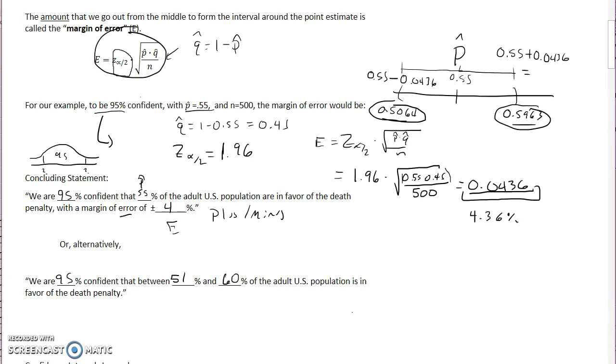And you can see this is now, rather than just saying, you know, 55% of the population believes in the death penalty, we're presenting it as an interval. So we think we're pretty confident that it's somewhere between 51% and 60% based off of our data.